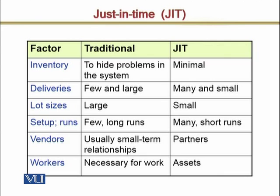Regarding vendors, in traditional manufacturing there are many vendors who are made to compete against each other through competitive bidding, so that the cost of material can be reduced. For example, one vendor quotes 100 rupees, you go to another and tell them, and they offer 98. You go back and so on — suppliers are pitted against each other. But not in just-in-time. In JIT, suppliers are partners of the buyer, and the relationship is built on partnership and trust, with the buyer helping the supplier to eliminate waste and quality problems.